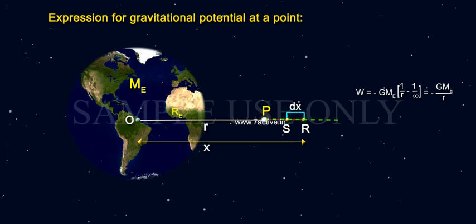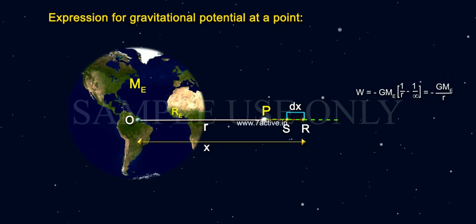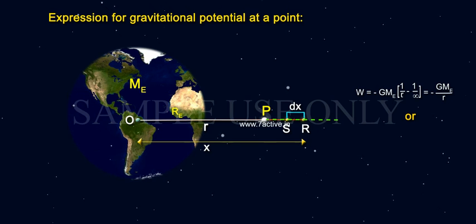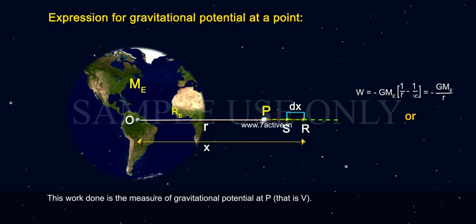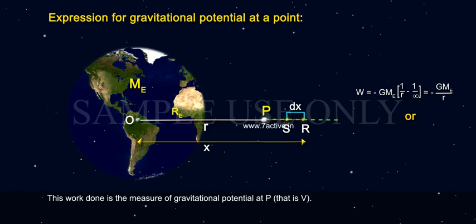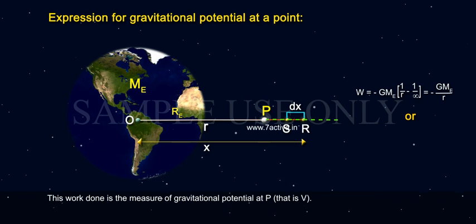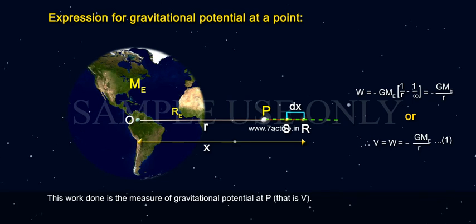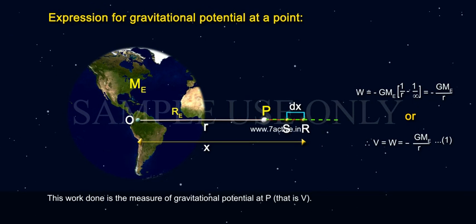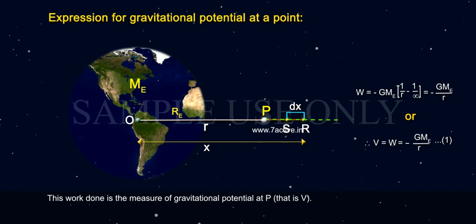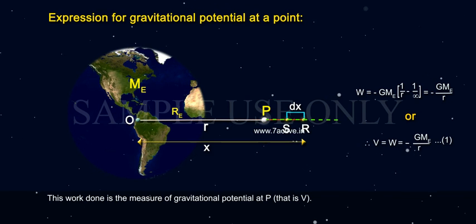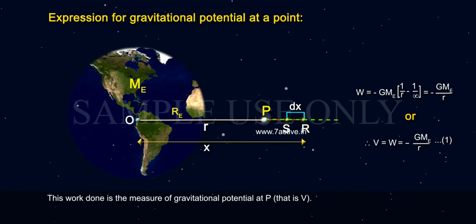This work done is a measure of gravitational potential at P, that is V. Therefore, V equals W equals minus GMₑ by R, equation 1.